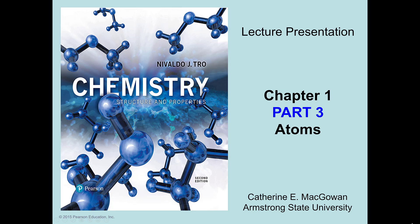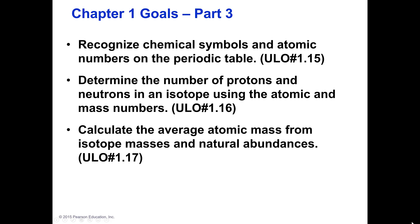Hello everyone, welcome back to atoms. In part three we're going to do a lot of things. We're going to continue looking at chemical symbols and atomic numbers on the periodic table, continue talking about isotopes, using the atomic and mass numbers to figure out the isotopes, and then we're going to calculate the average atomic mass — that number you see on the periodic table that has the decimal places. We're going to see how they come up with that.